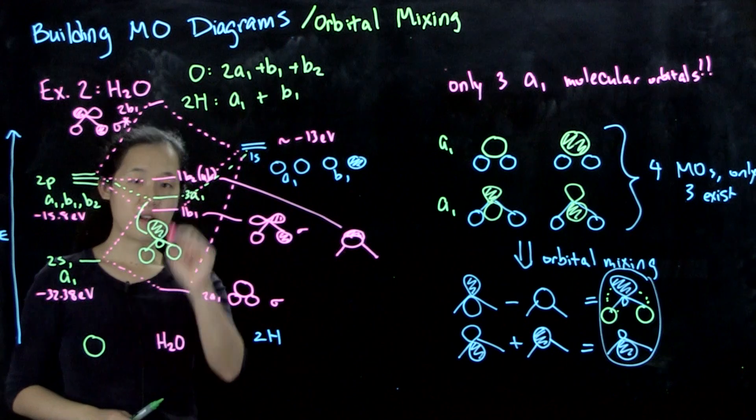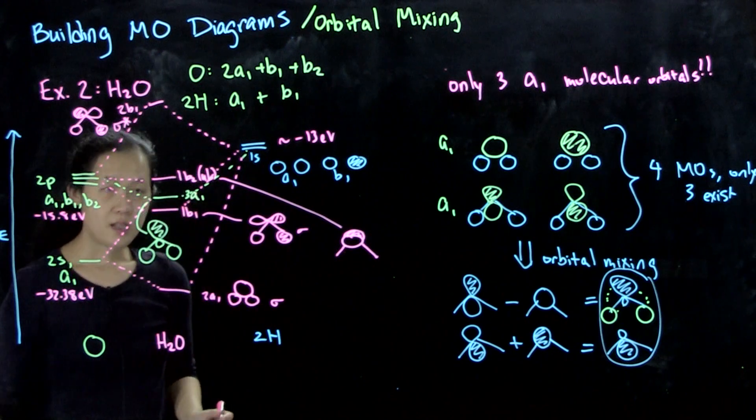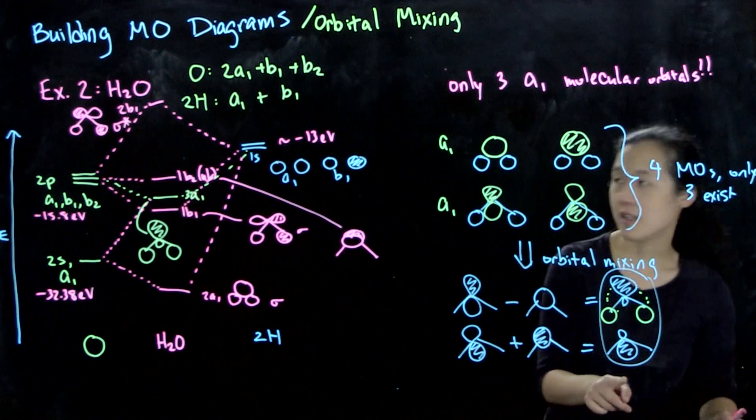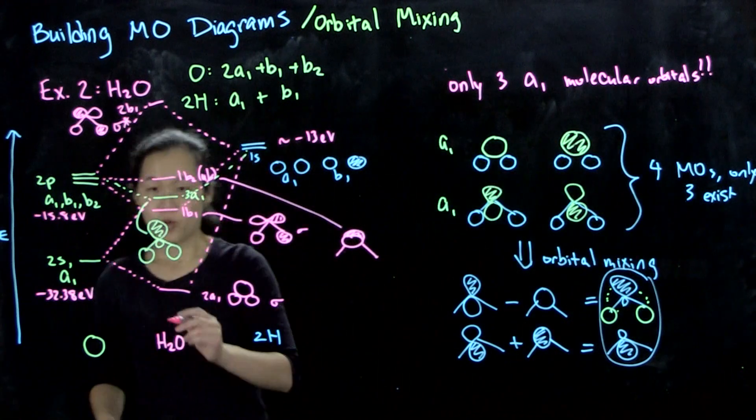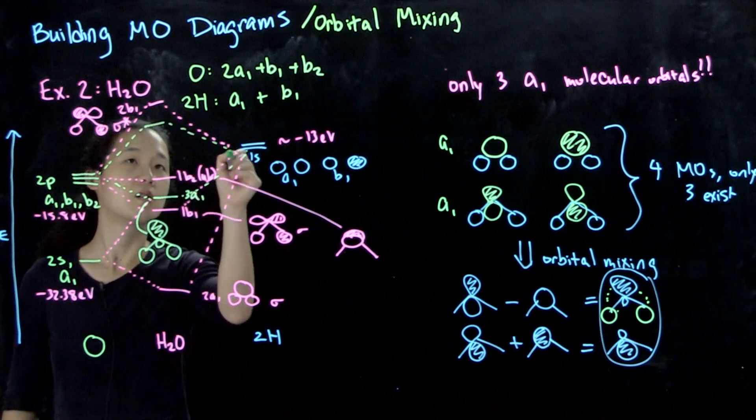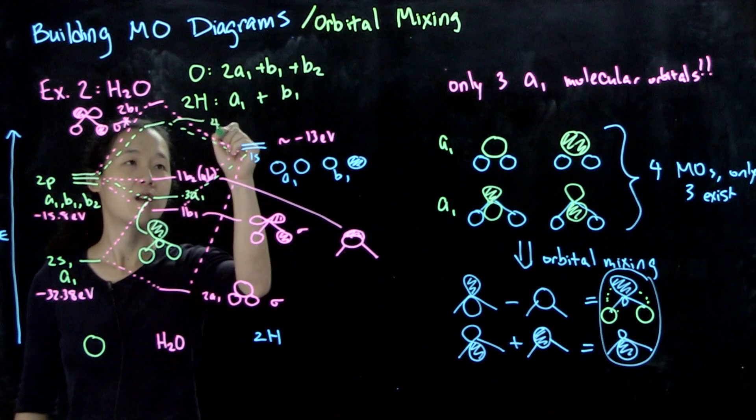We have 2a1, 3a1. Now we need this last combination here, which is even more anti-bonding. We will now have our mixed orbital. This is our last a1, our 4a1, which looks like this one.